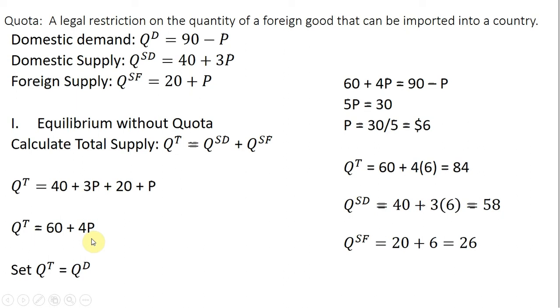Next we're going to just calculate equilibrium by setting the total quantity supplied in the market equal to the quantity demanded domestically. So here is the supply, total supply, 60 + 4P that we just solved for. I'm going to set that equal to domestic demand, 90 - P.